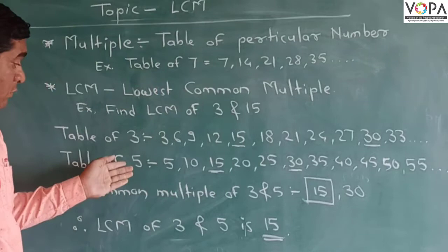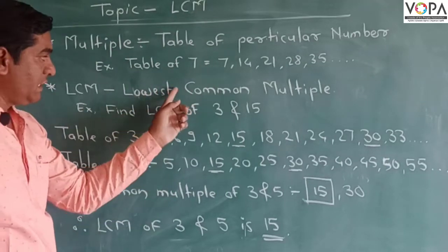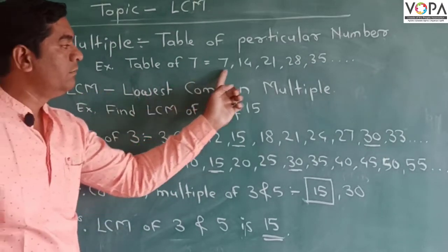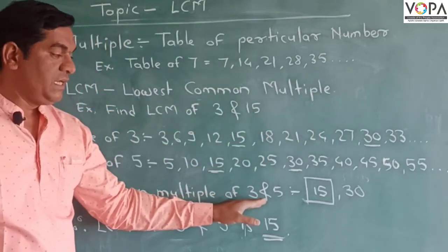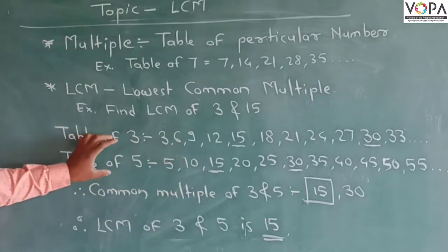Right now we want to take a common multiple. Here in LCM we find a common multiple. So in this case, common multiple of 3 and 5. Which number is common here?